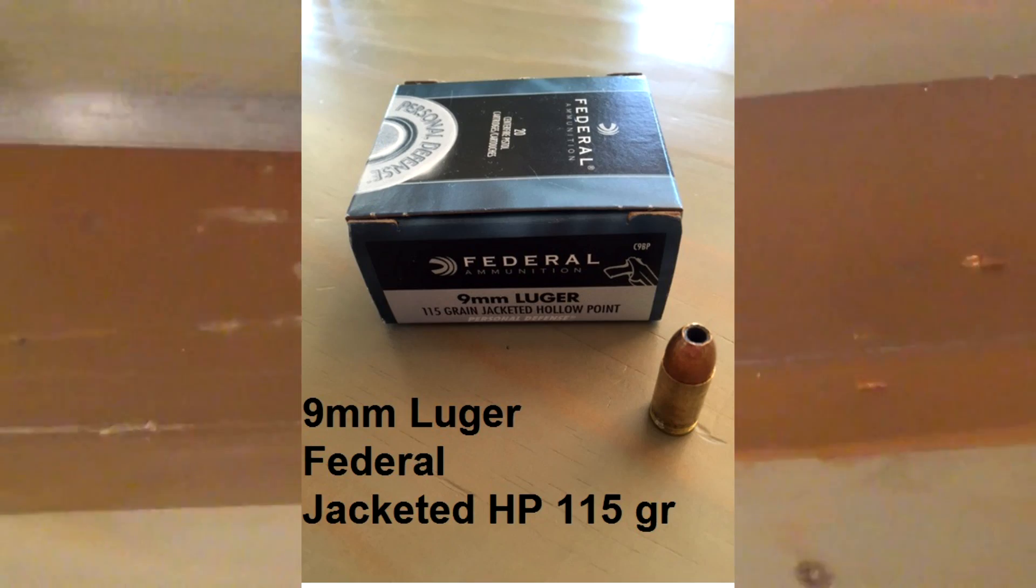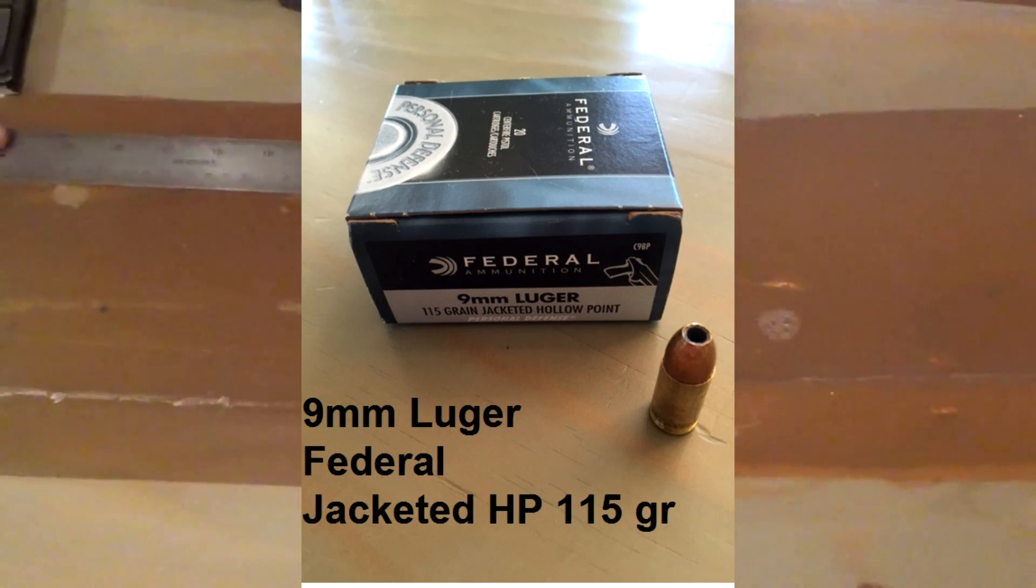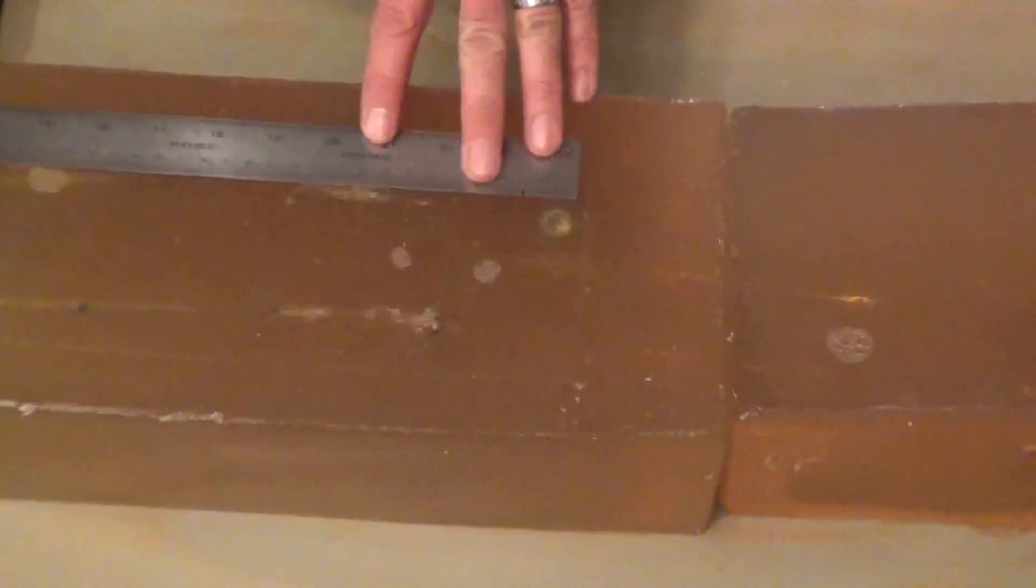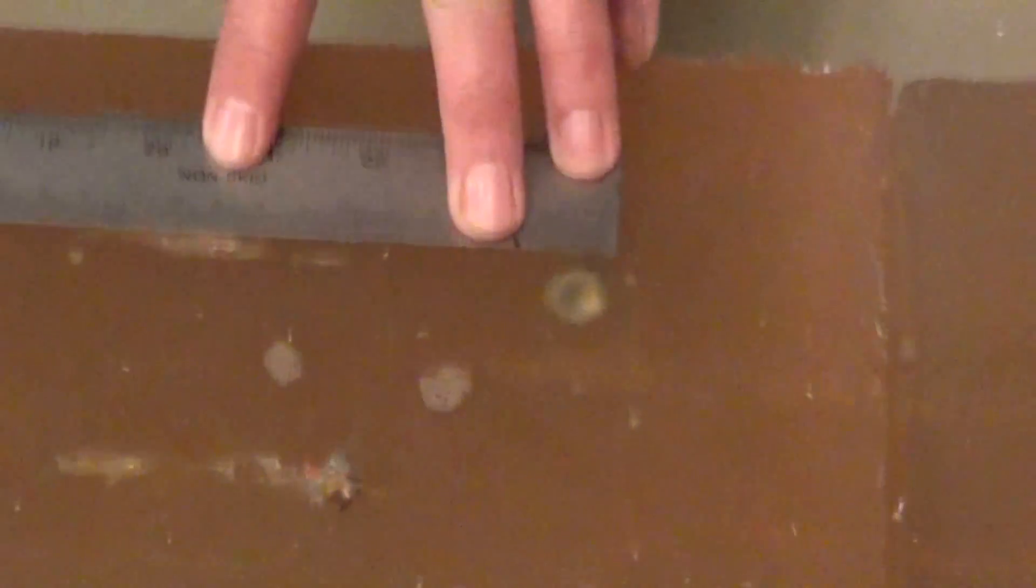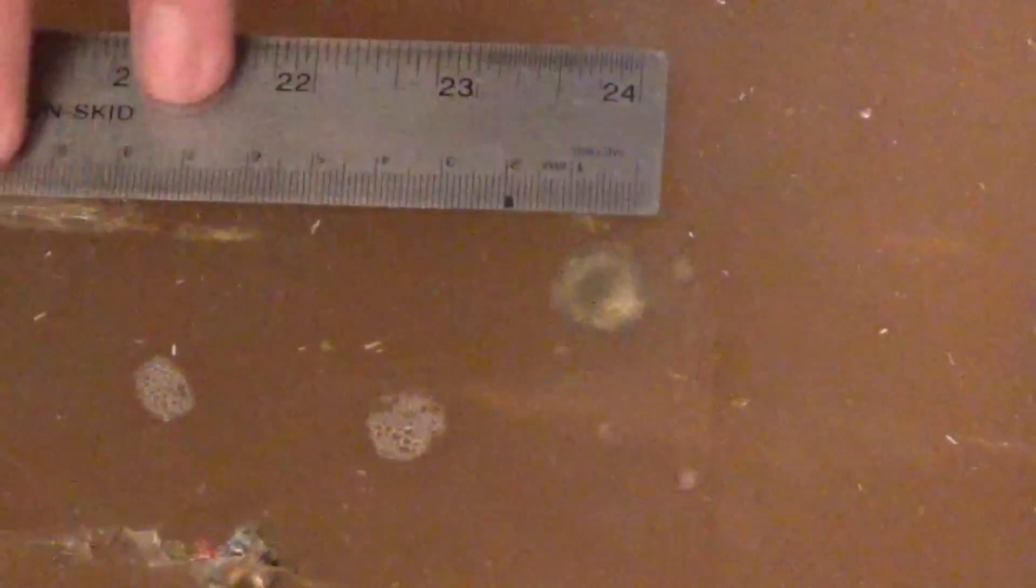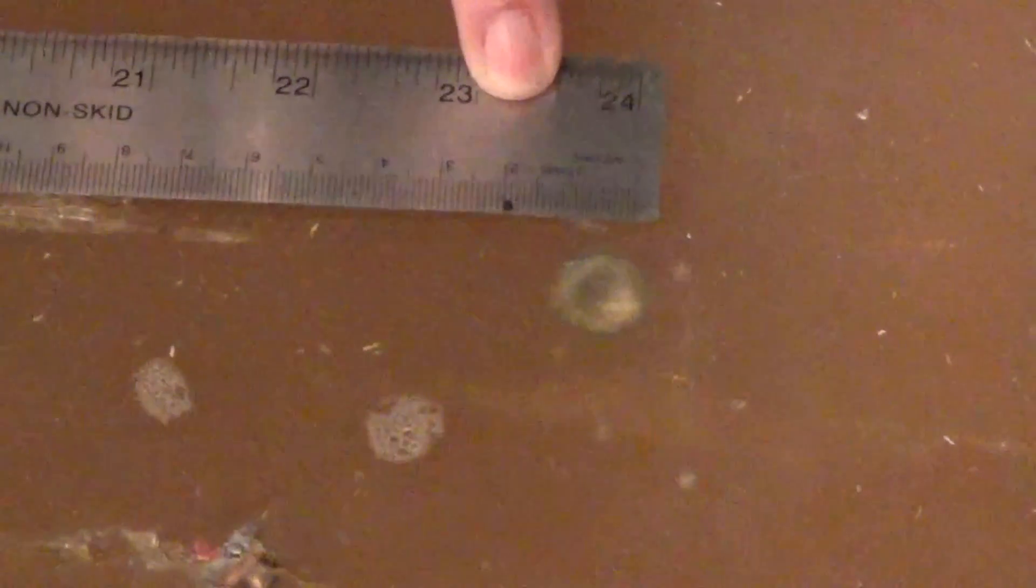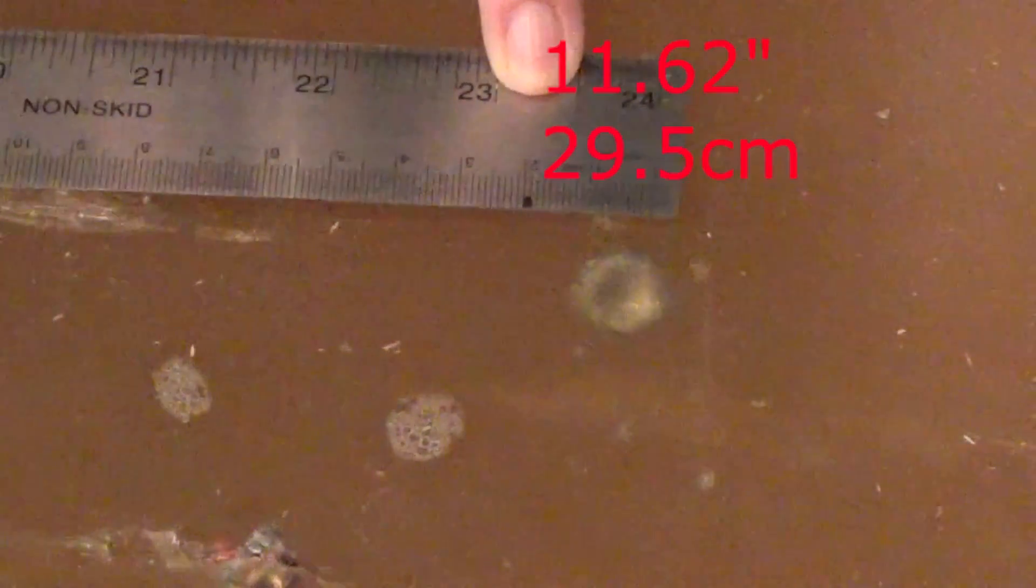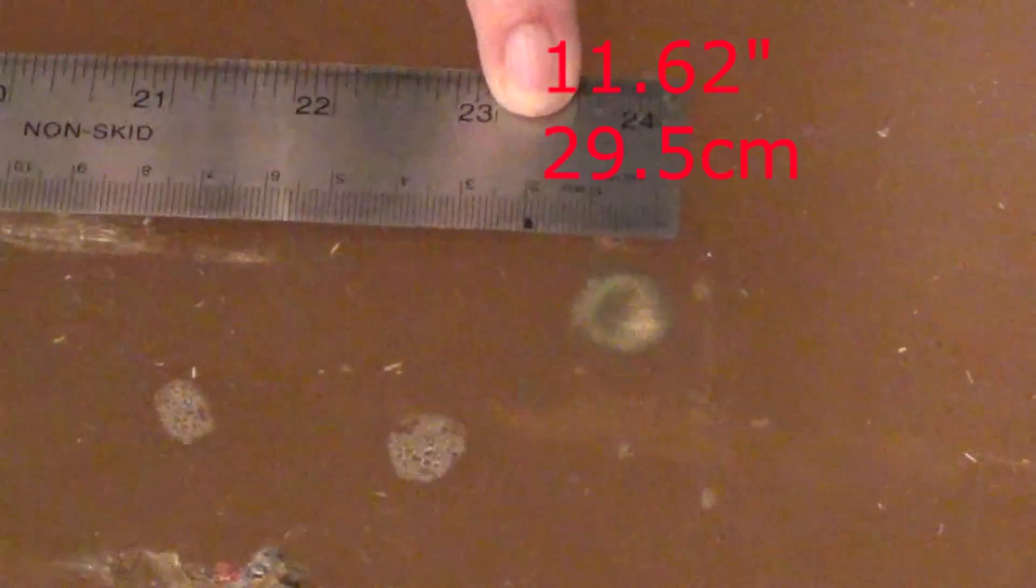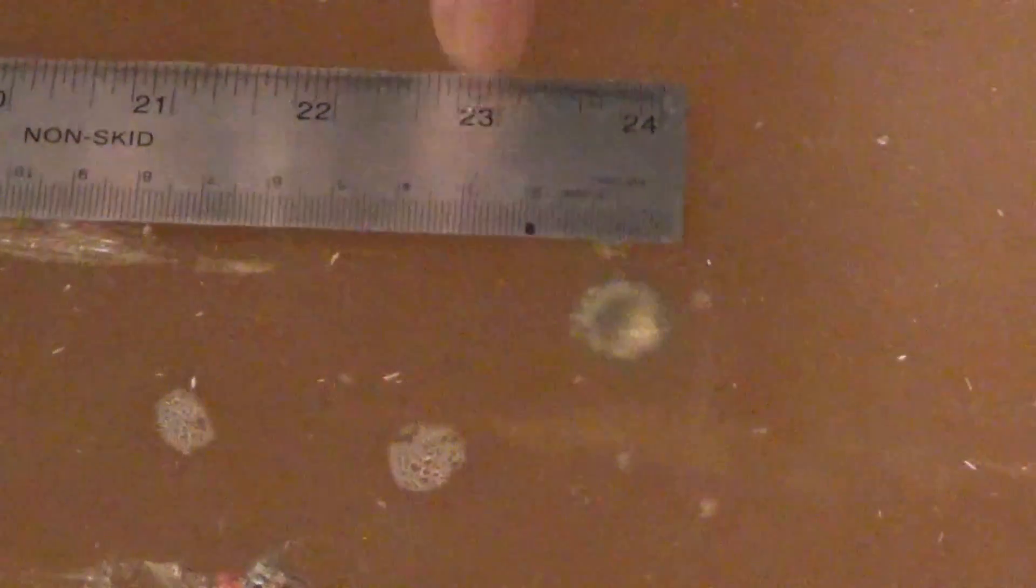The next control that we had was our 115 grain 9mm Luger, or 9mm NATO round. That was a Federal hollow point round. That round managed to penetrate in 29.5 centimeters, which is 11.62 inches. From the outside, it appears to have expanded very, very well.